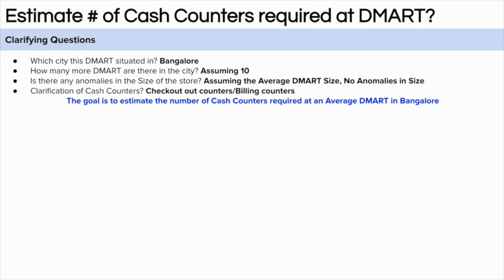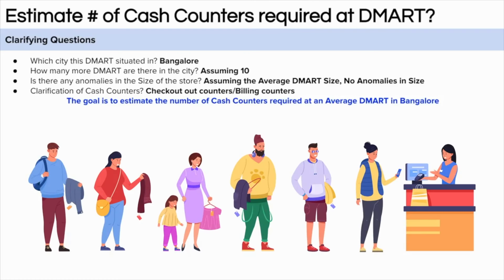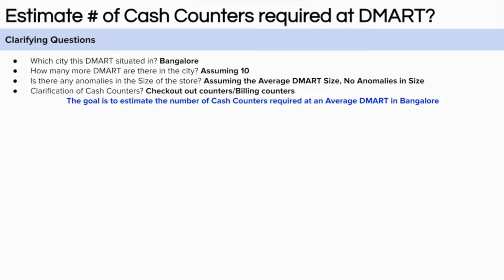How do we think about estimating this problem? If we can match the checkout demand during the peak hour, we are good to go with all cash counter requirements — because if peak demand is met, all other hours are covered. Let's start with the high-level equation. We begin with the Bangalore population and get the number of households, because not all family members go shopping at D-Mart — household is the better proxy.